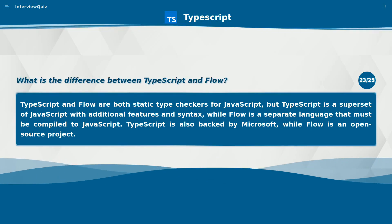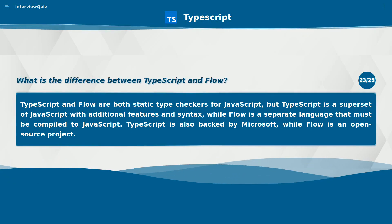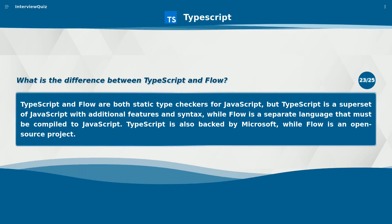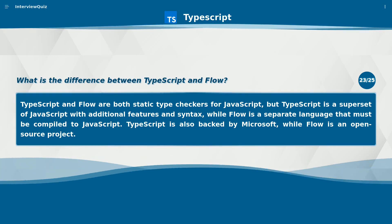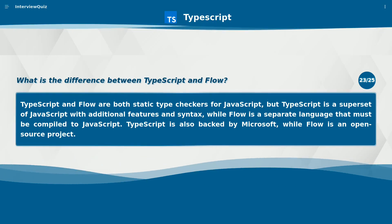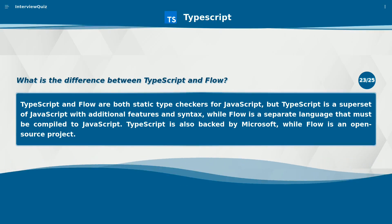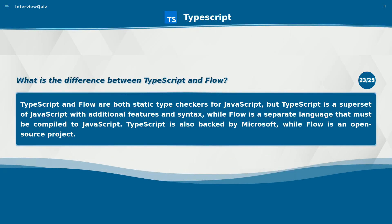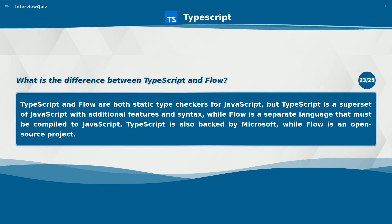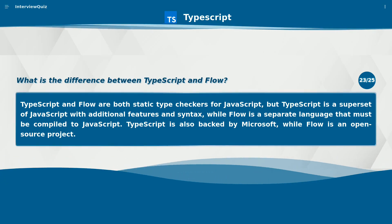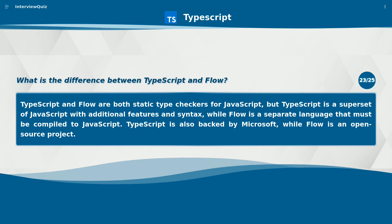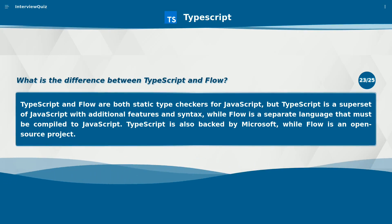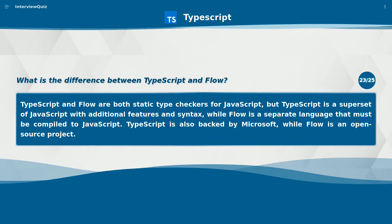What is the difference between TypeScript and Flow? TypeScript and Flow are both static type checkers for JavaScript, but TypeScript is a superset of JavaScript with additional features and syntax, while Flow is a separate language that must be compiled to JavaScript. TypeScript is also backed by Microsoft, while Flow is an open-source project.